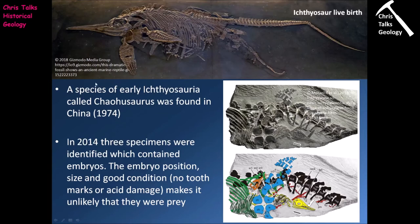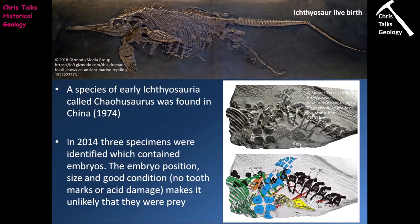An early ichthyosaur found in China in 1974 is very important because in 2014, three specimens were identified to contain embryos. When we look at the embryos, the embryo position is located at the base of the spine towards the bottom of the ribcage. We also note that the embryos do not show tooth marks and they don't show any acid damage. Tooth marks would suggest they were prey items that had been chewed on, while acid damage would suggest the body had passed through the digestive system.